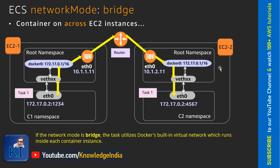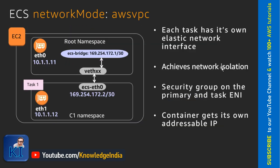When the network mode is Bridge, the task utilizes Docker's built-in virtual network which runs inside each container instance. We also showed you this in the previous video. The next type of networking is AWS VPC mode. This is very similar to how networking works for EC2 instances.